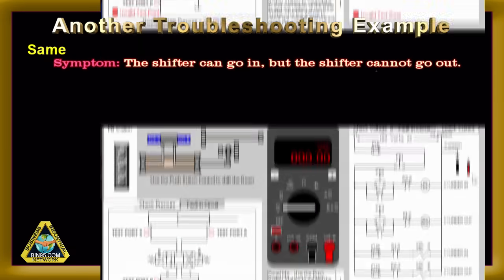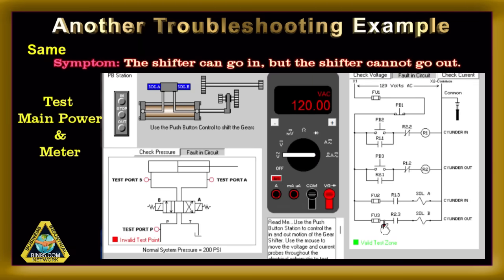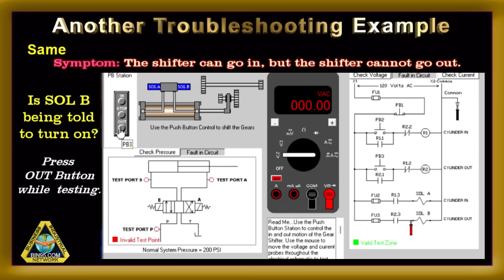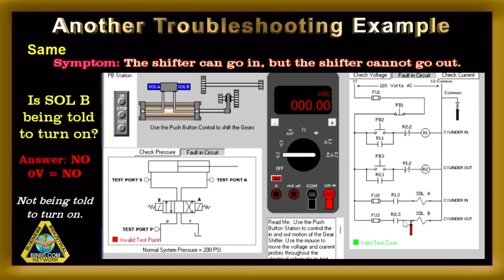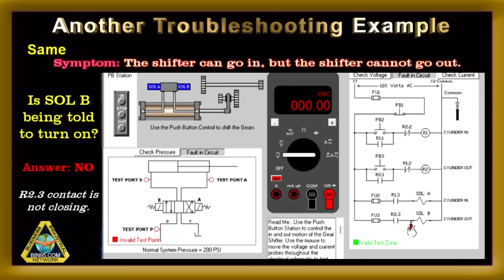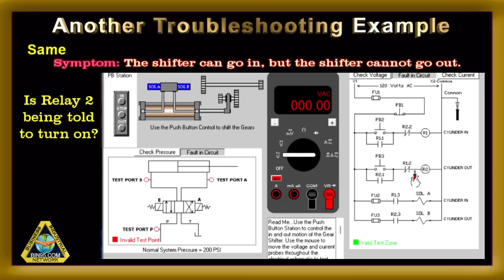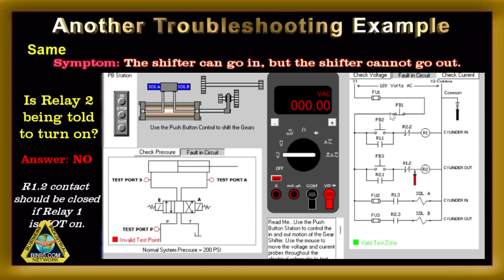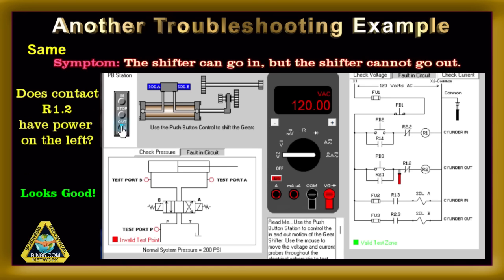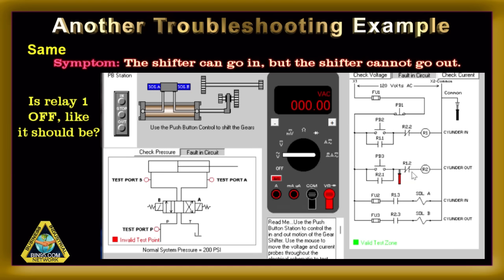Here is another troubleshooting example with the same symptoms but a different cause. Hint: it is not solenoid B this time. Next, see if solenoid B is energized — press the OUT button while testing for voltage. No voltage here. Next, check the left side of R1.2 for voltage while the OUT push button is pressed. It should be 120 volts.